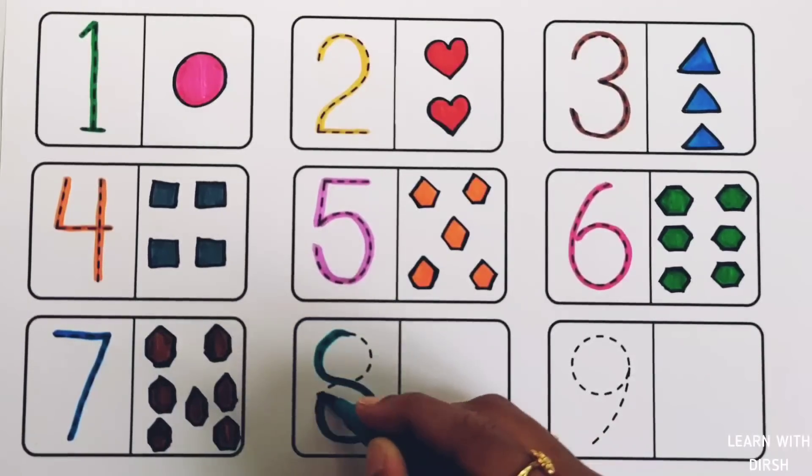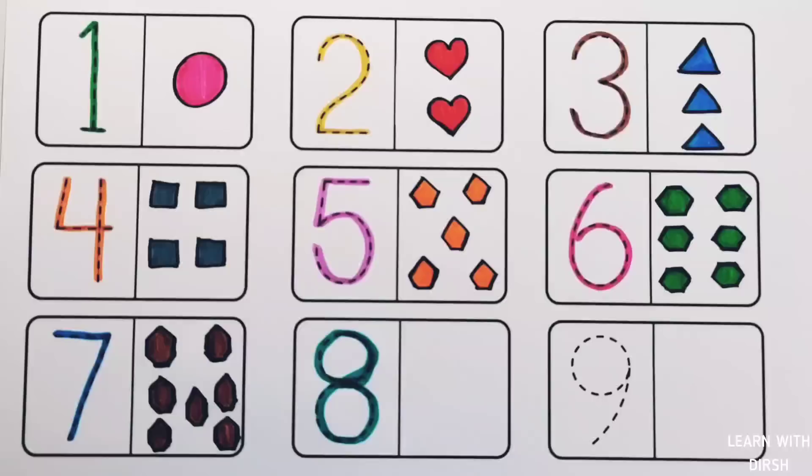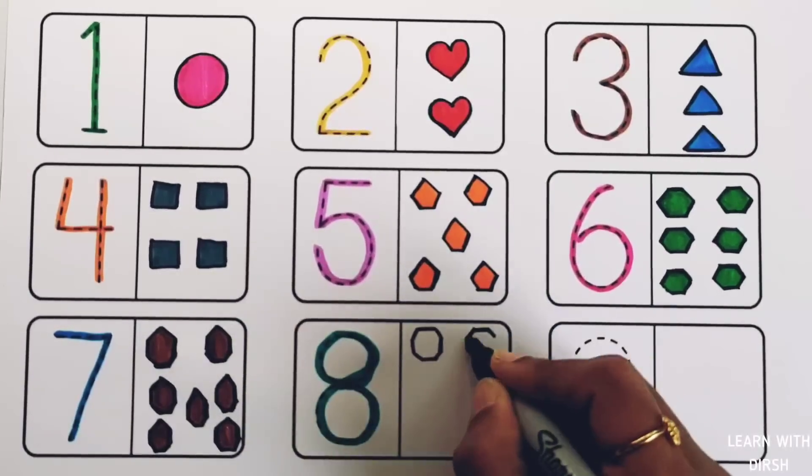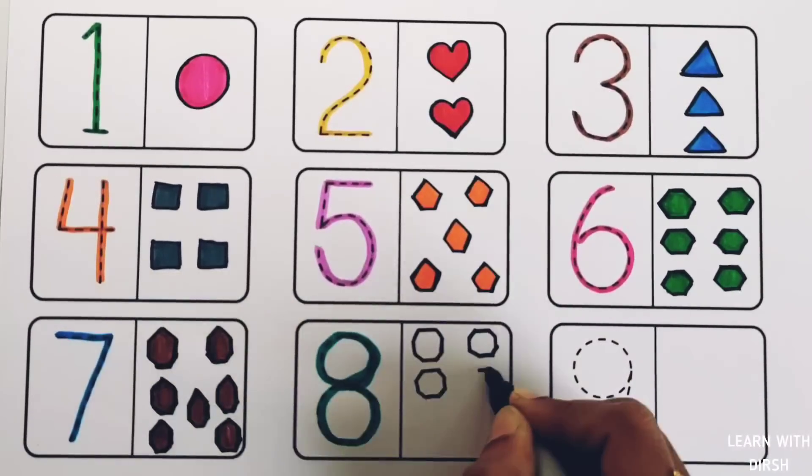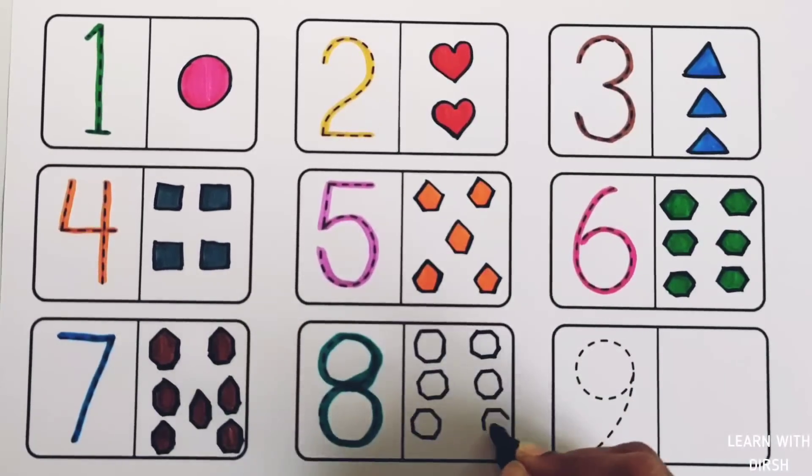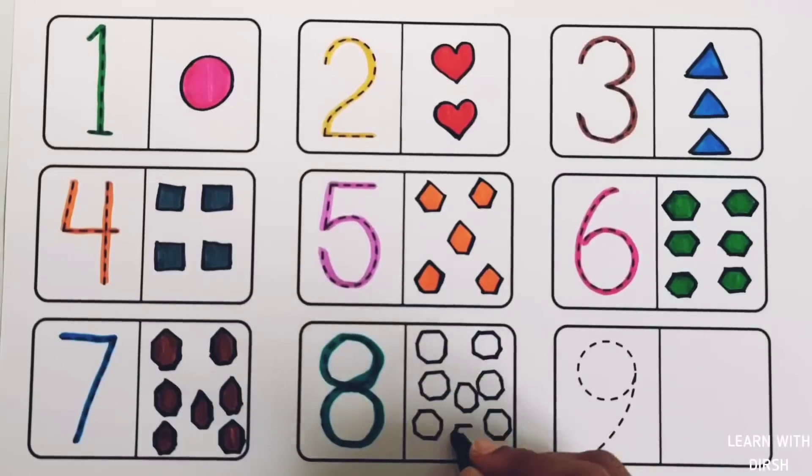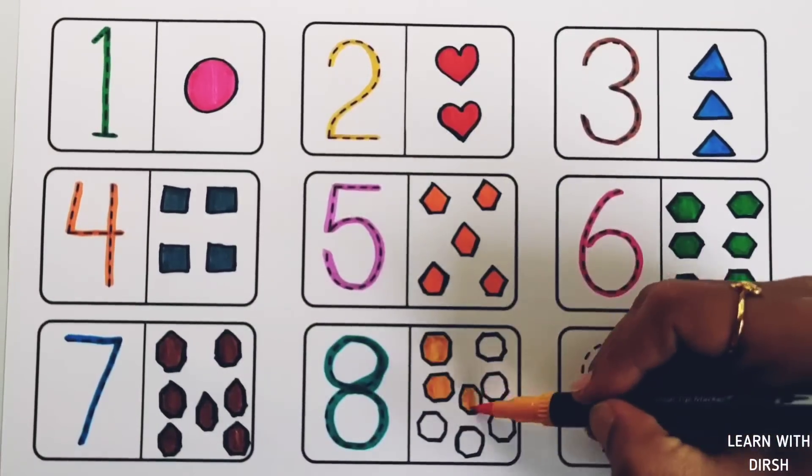Number eight: eight octagons, yellow color.